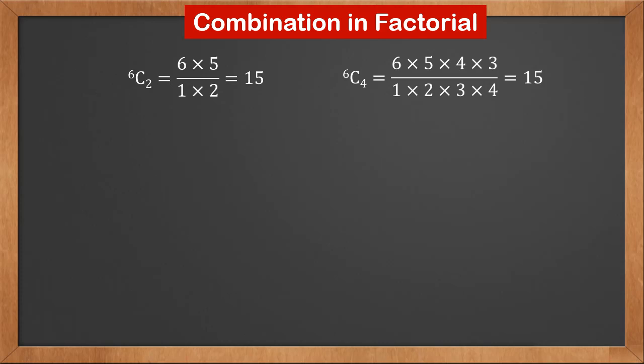6C4 is 6 times 5 times 4 times 3 over 1 times 2 times 3 times 4. This is also 15. It is equal to 6C2. Therefore, we are guessing nCr is nC(n minus r).